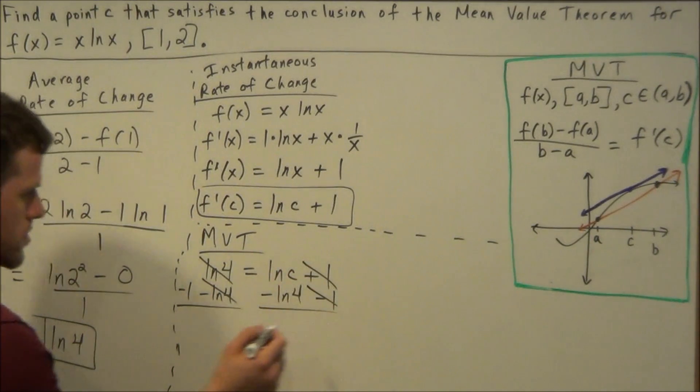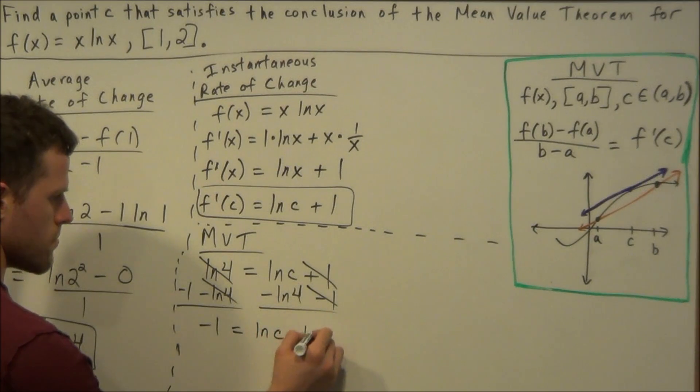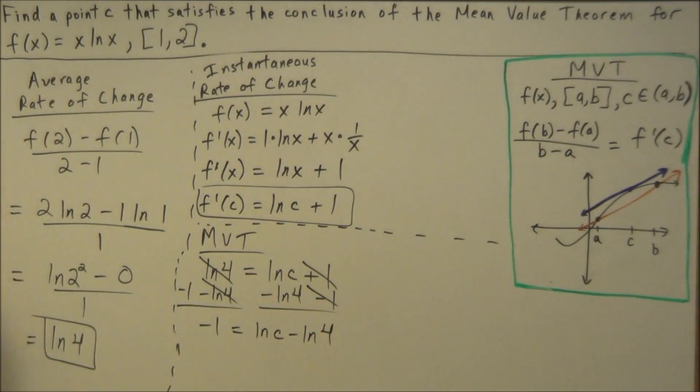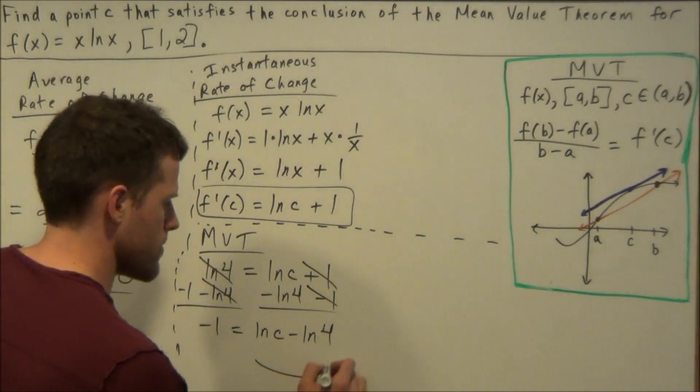Natural log 4 minus natural log 4 will cancel. 1 minus 1 cancels, and we'll have negative 1 equals natural log of c minus natural log of 4. From this stage here, we could use the subtraction property of logs and combine this into a single log by division.